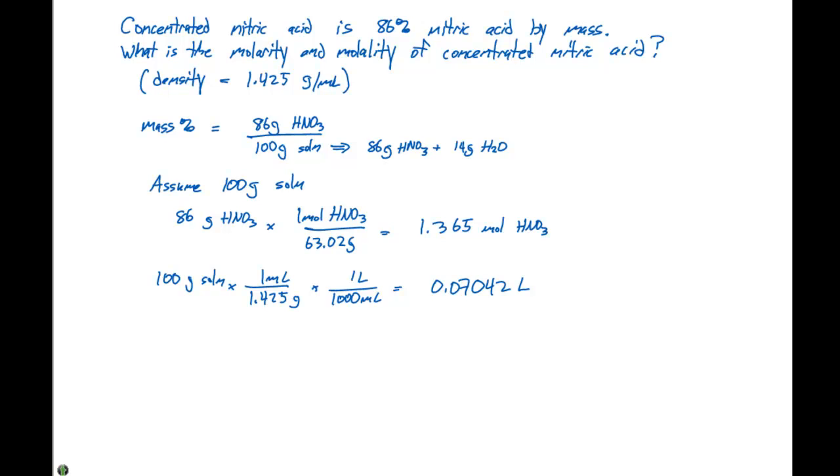So remember, our molarity unit is gonna be moles of HNO3 per liters of solution. We have 1.365 moles of HNO3 divided by 0.07042 liters. This is gonna give us a concentration of 19.4 molar.